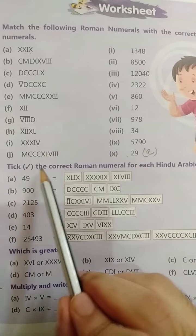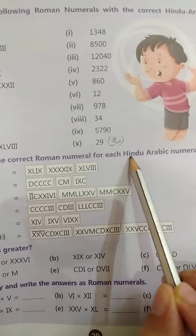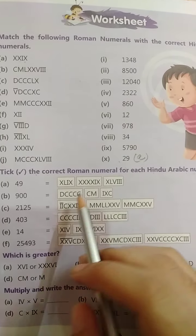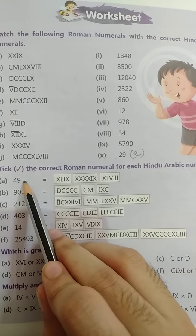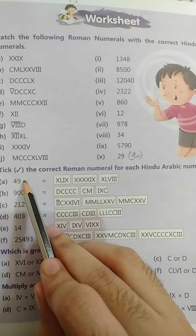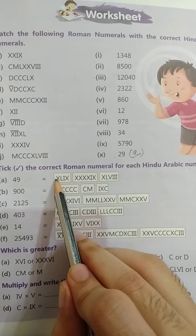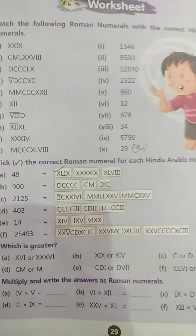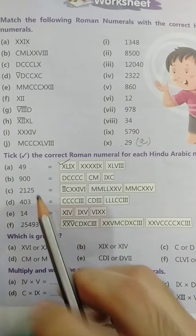Ab ismein dekhiye, tick the correct Roman numerals for each Hindu-Arabic numerals. To each Hindu-Arabic numerals ke liye humein tick karna hai. To 49, kaise represent karte hain? 50 minus 10 plus 9, 50 minus 10 plus 9. To yeh correct hai.